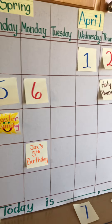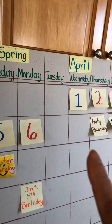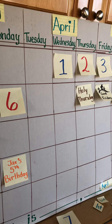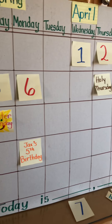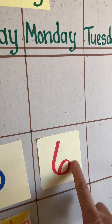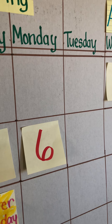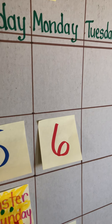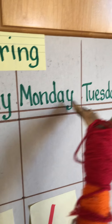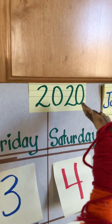Remember the little poem that goes with the six? Make a curve, and then a loop — there are no tricks to make a six. Ready? Make a curve, then make a loop — there are no tricks to making a six. So boys and girls, let's do the date sentence. Today is Monday, April 6th, two thousand and twenty.